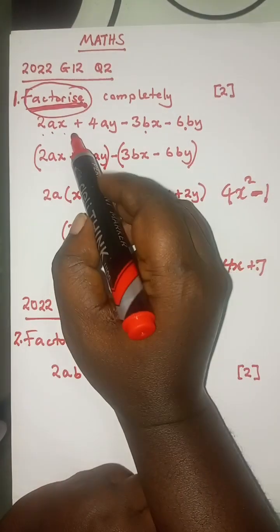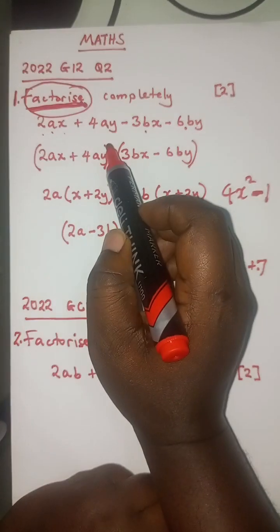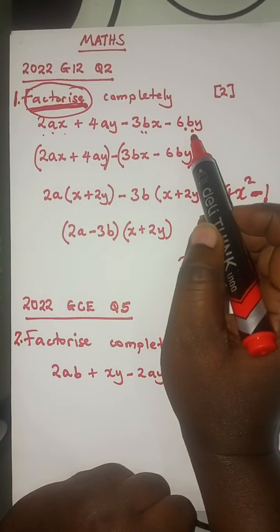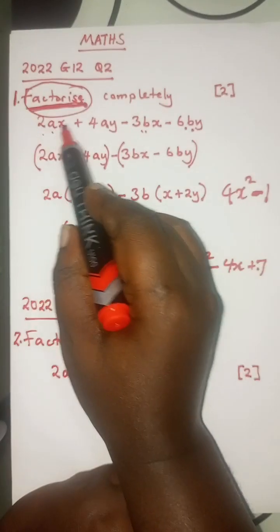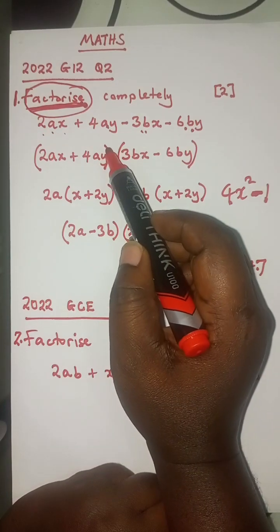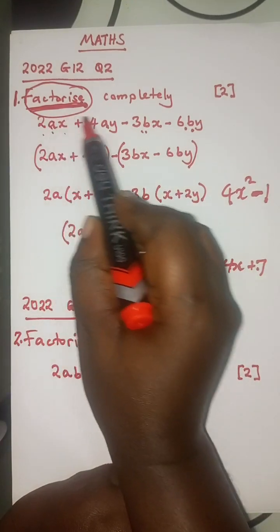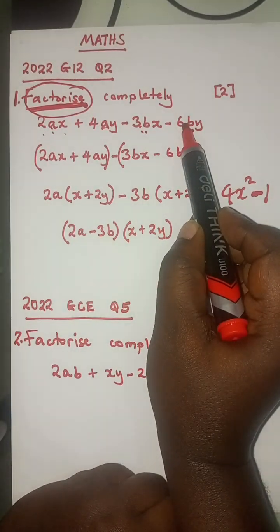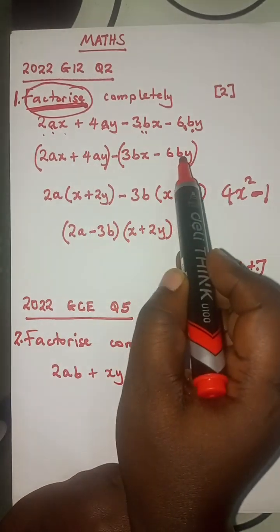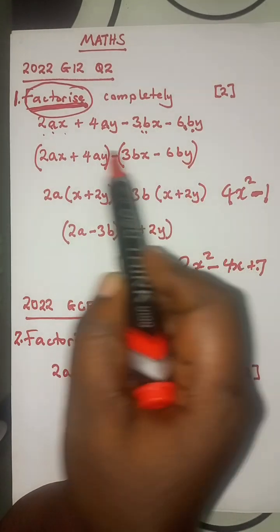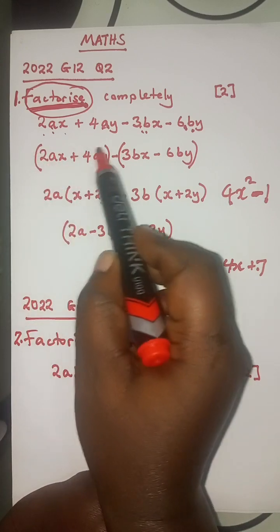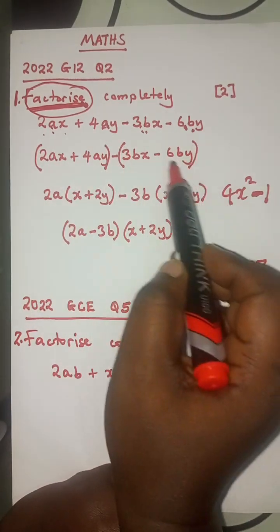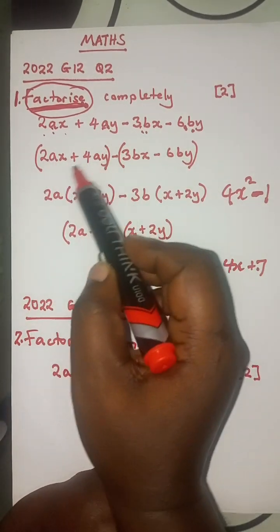So with our question, it's factorization by grouping, because there are four terms — 1, 2, 3, 4. Since it is by grouping, it means you have to group them. You have to put them in pairs of two. I've grouped them, meaning you introduce brackets to demarcate or to group them.